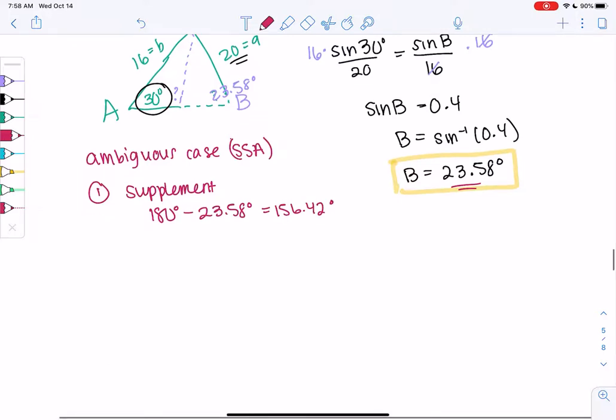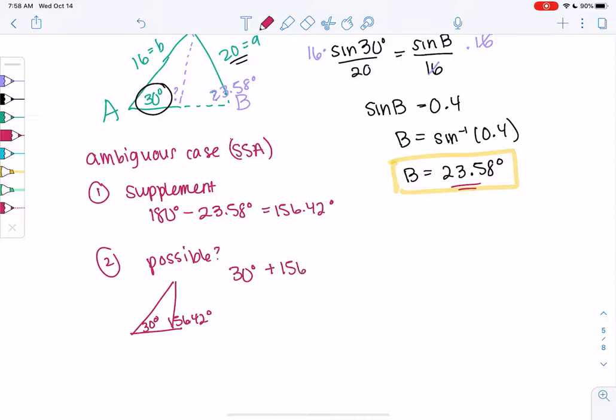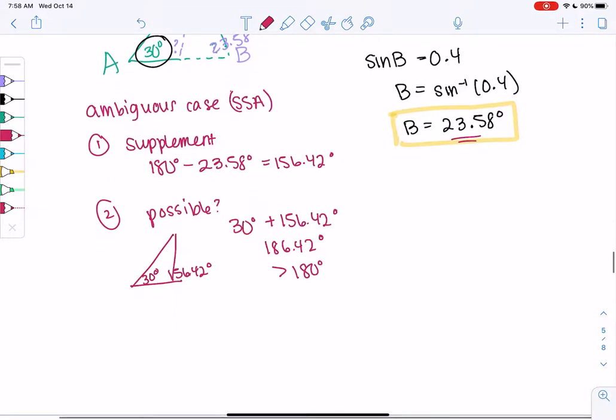And then the question is, is that angle possible? So we have 30 degrees and 156.42. And then if those are more than 180, it's not possible, because triangles only have 180 degrees. So we're going to add those together. It looks like we're getting 186.42, so it's not a possible triangle. If it adds up to more than 180 degrees, it's not a triangle. Triangles add up to 180, so not possible.